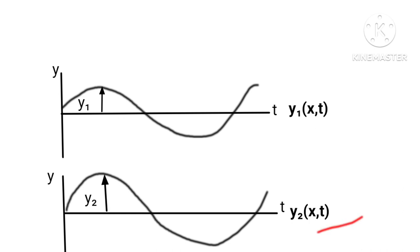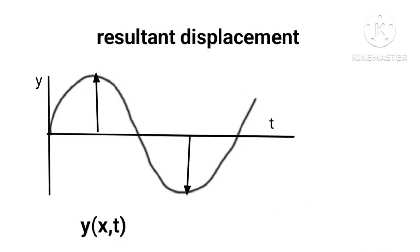Mathematically speaking, Y(X,T) equals Y₁(X,T) plus Y₂(X,T).